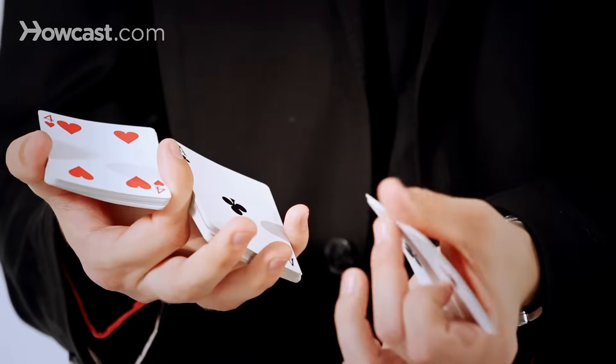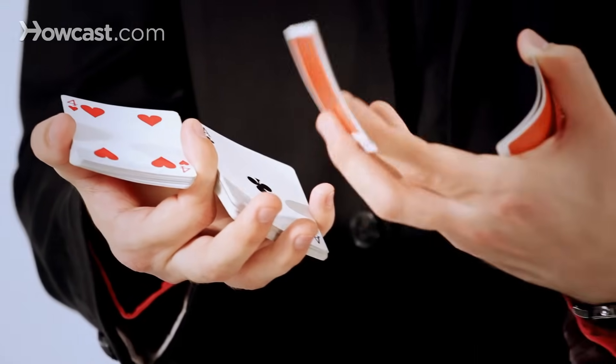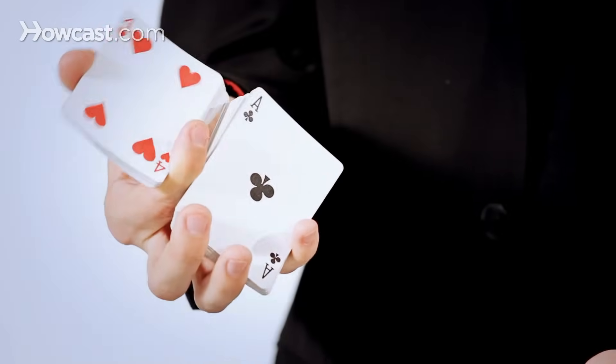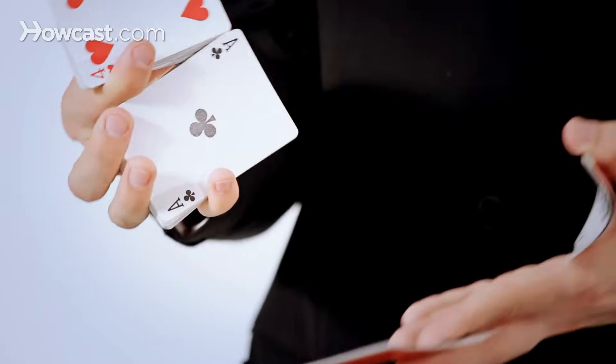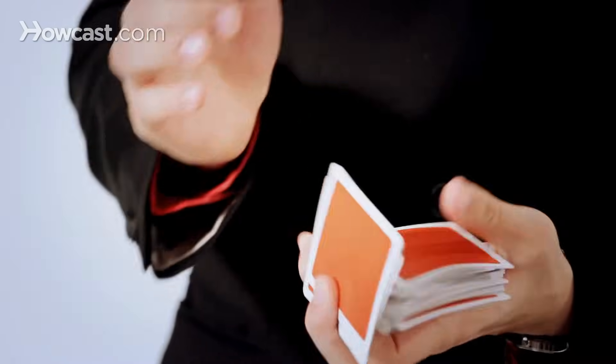And you do a thumb cut. So your thumb comes over, this opens up, and you can shuffle these into each other. This is going like this. And then you close.